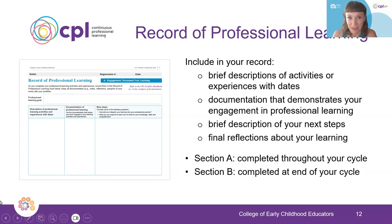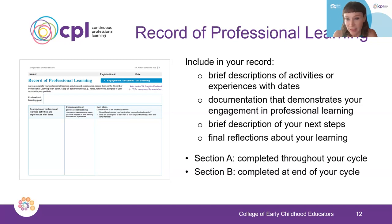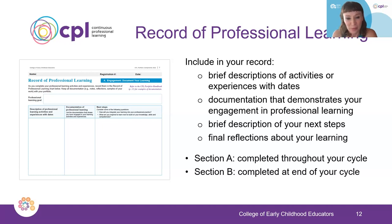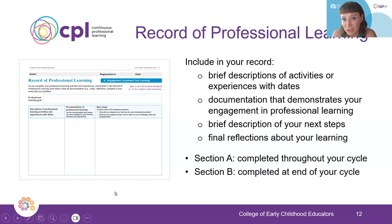The record of professional learning is the next part. Included in this record are brief descriptions of the activities or experiences that you engaged in with dates that you completed them. You're going to provide documentation that demonstrates your engagement with the professional learning, a brief description of next steps, and a final reflection about your learning through the experience or activity. Section A is completed throughout the cycle — throughout the year — and then section B is completed as you're wrapping up your cycle at the end.